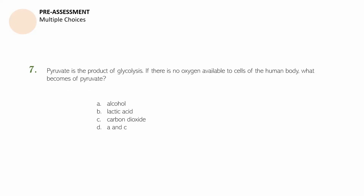Question number seven: Pyruvate is the product of glycolysis. If there is no oxygen available to cells of the human body, what becomes of pyruvate? A. Alcohol. B. Lactic acid. C. Carbon dioxide. D. A and C. You may pause this video to get more time.